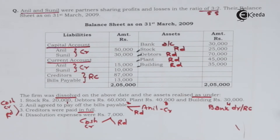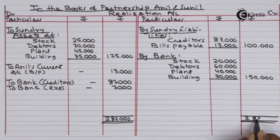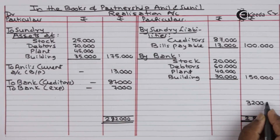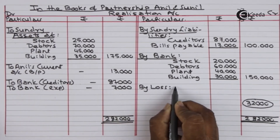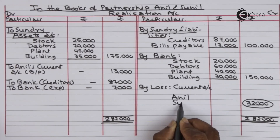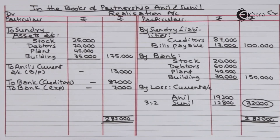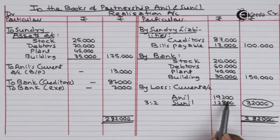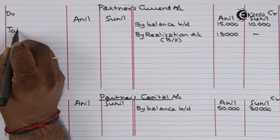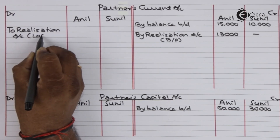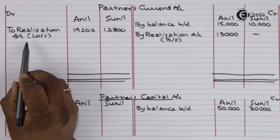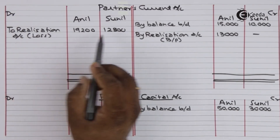Let us now close the realization account. The realization account is closed, showing a loss of 32,000. This loss is divided between partners Anil and Sunil in their profit-sharing ratio of 3:2 — Anil's share of loss is 19,200 and Sunil's share is 12,800. This will be transferred to their current accounts. Partners' current account debit side — to realization account — loss transferred: Anil 19,200, Sunil 12,800.